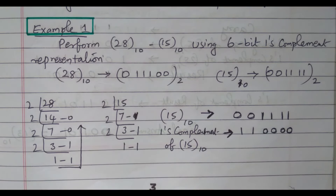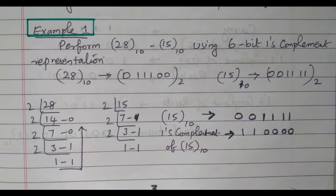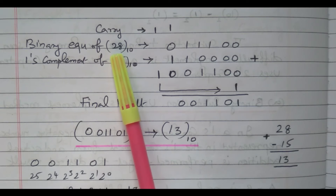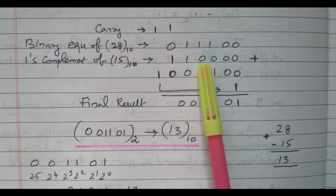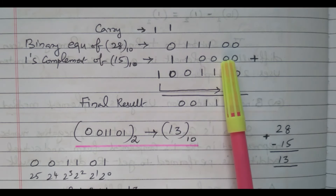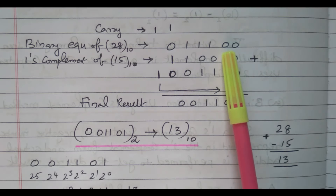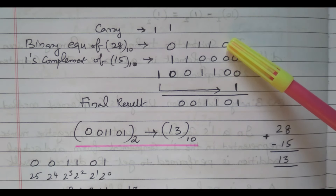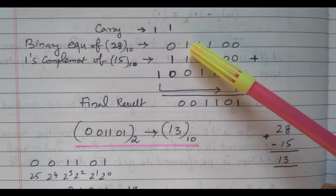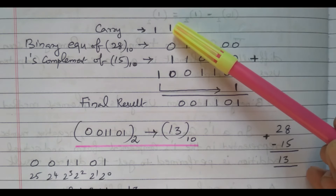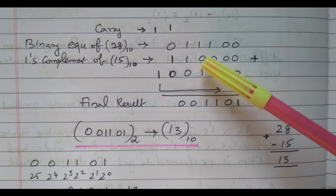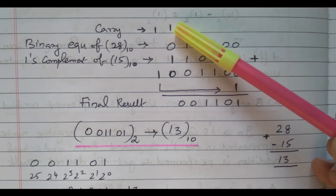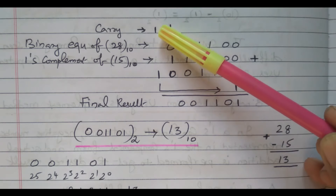Now we will see how to add. The first number, 28, has binary equivalent 011100. The one's complement of the second number, 15, is 110000. Adding these two: 0+0=0, 0+0=0, 1+0=1, 1+0=1, 1+1=0 carry 1, then 0+1 plus carry 1 gives sum 0 carry 1. A carry is generated at the end.